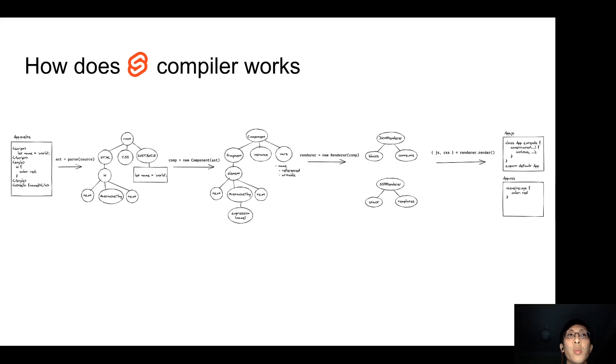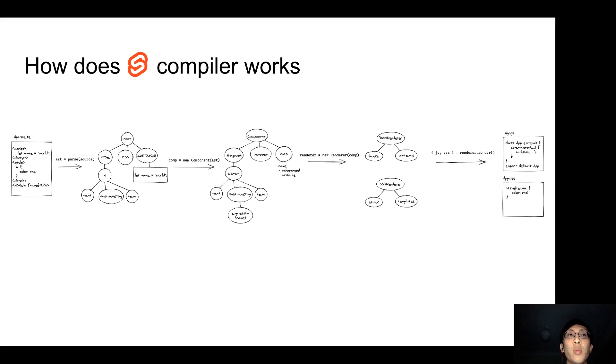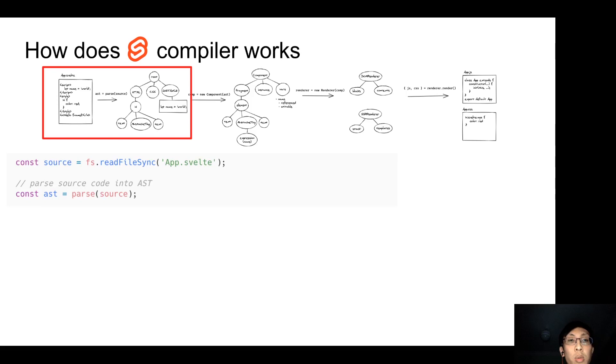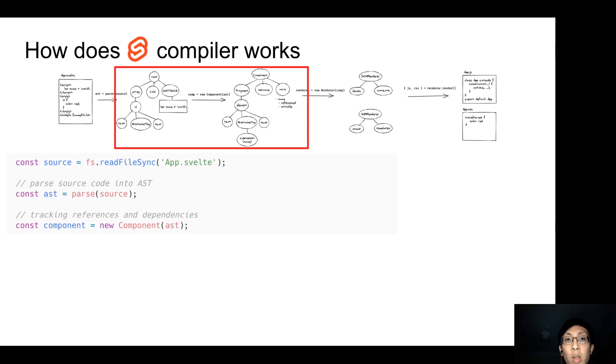Here is an overview of the process. Svelte parses the code into AST. And then with the AST, Svelte creates a component instance which tracks references and dependencies of the code using the AST.